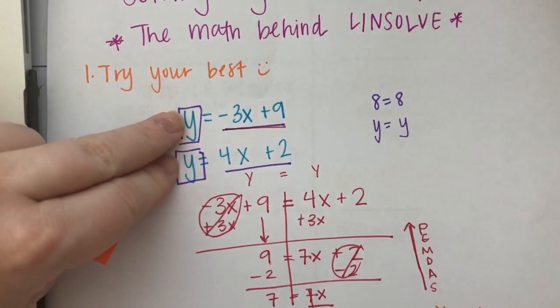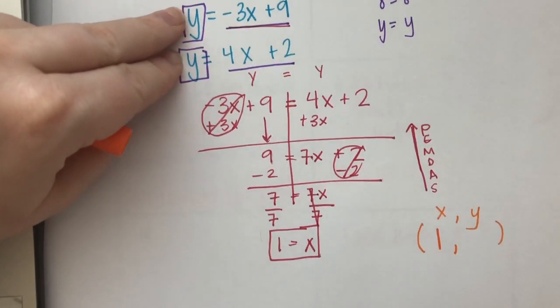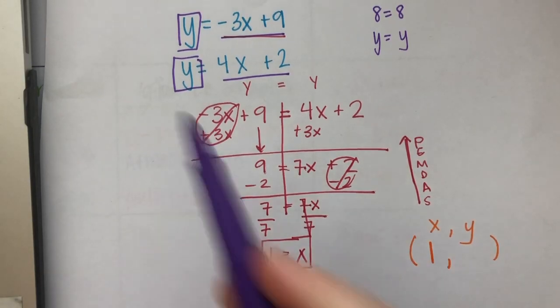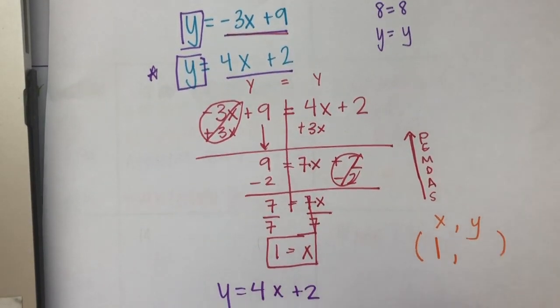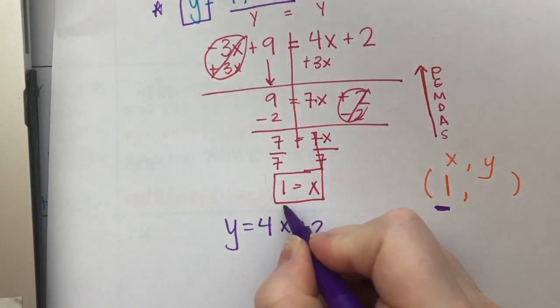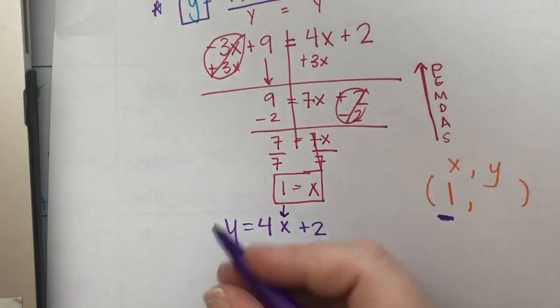In your original equations right here, you had 2 y equals problems. So we just need to pick 1 and we can plug that in. I hate negatives. So I'm going to do the one that does not have a negative. So here's what I'm going to say. I'm going to pick this one right here. You can do the same. So we have y equals 4x plus 2. But we just said we know that x is 1. So we have this x. So I'm going to replace that x with a 1.